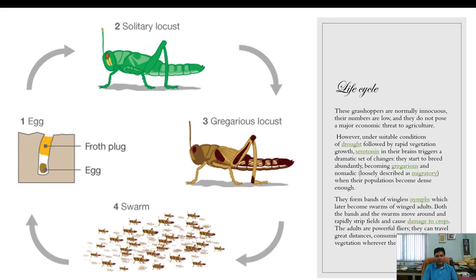Under these conditions they start to breed abundantly and become the gregarious phase. Serotonin secretion takes place in the brain of the solitary-phase locust and converts it into the gregarious locust under favorable climatic conditions — specifically drought followed by rapid vegetation growth.